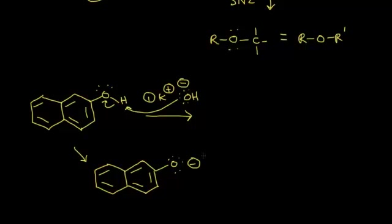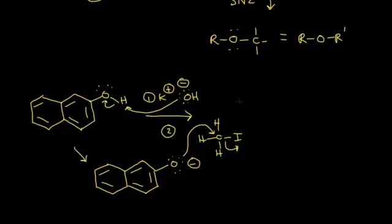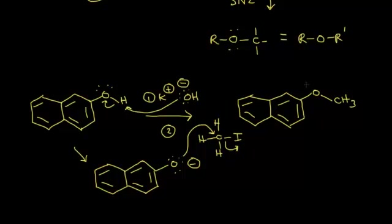In the second step, once we have formed our alkoxide anion, we add our alkyl halide — methyl iodide. The carbon in methyl iodide is the electrophilic carbon. A lone pair of electrons on the oxygen nucleophile attacks that carbon, kicking the electrons off onto the iodine, and we form our product. The rings stay the same, and we now have our oxygen attached to a methyl group that came from the methyl iodide — so we've formed our ether product.